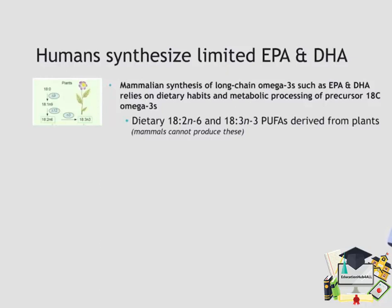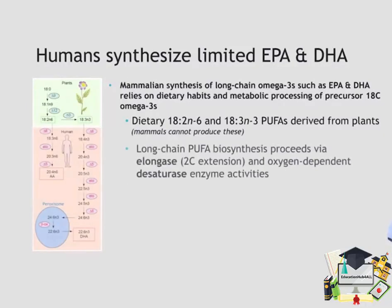Rather, we rely on dietary habits and the metabolic processing of precursor shorter-chain fatty acids — for example, 18-carbon fatty acids — to finally produce these important long-chain omega-3 PUFAs. For example, humans eat plant-derived materials enriched in things like 18:2 omega-6 fatty acid and 18:3 N3, also known as alpha-linolenic acid, derived from plants. Our bodies are then able to elongate and desaturate these through the concerted action of those two enzyme classes to produce the final products EPA and DHA.